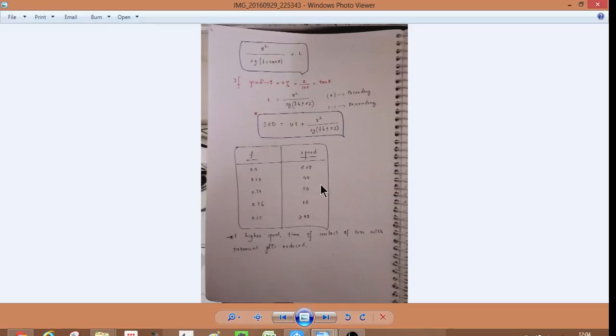If we have inclination like this, I mean, the gradient is there. So if it is ascending gradient, it is positive. If it is descending gradient, it is negative. It is V square by 2G, F plus or minus N percent.